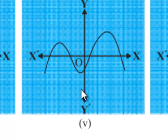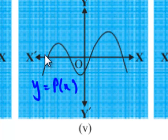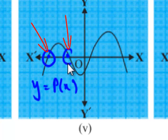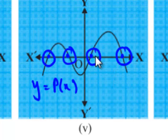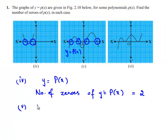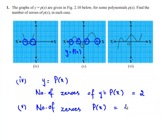And the fifth case: the graph y is equal to p of x is intersecting the x-axis at this point, this one, this one, and this one. Therefore, we have four points at which y is equal to p of x intersects the x-axis. So we can conclude the number of zeros of the polynomial p of x is equal to 4.